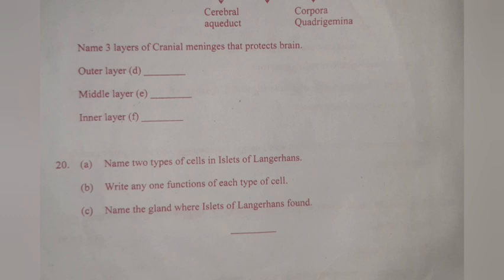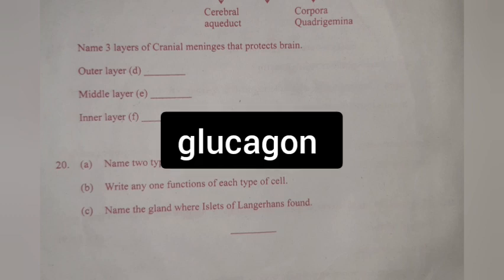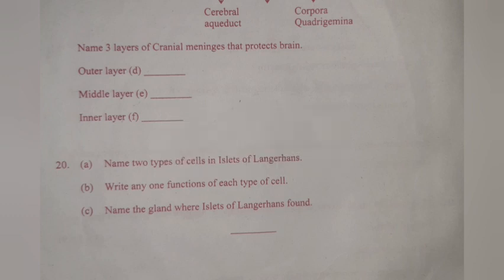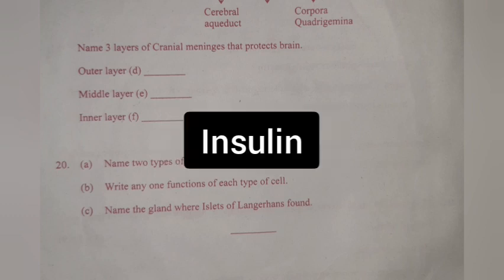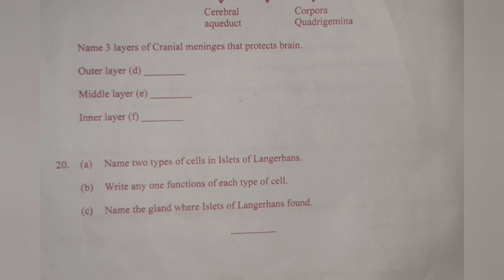Question 20A: Name two types of cells in islets of Langerhans. Answer: Alpha cells and beta cells. B. Write any one function of each type of cell. Answer: Alpha cells produce glucagon and beta cells produce insulin. C. Name the gland where islets of Langerhans are found. Answer: Pancreas.